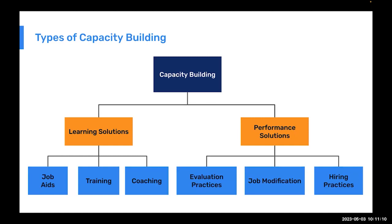We split these into two ideas. One is learning solutions — this is training, training materials, job aids, maybe coaching and one-on-one discussion. The second is performance solutions — how we evaluate staff, modifying jobs, hiring practices, changing terms of reference to attract the correct people, making sure they have the right skills. We're going to discuss both of these and their importance in affecting a DHIS2 implementation.